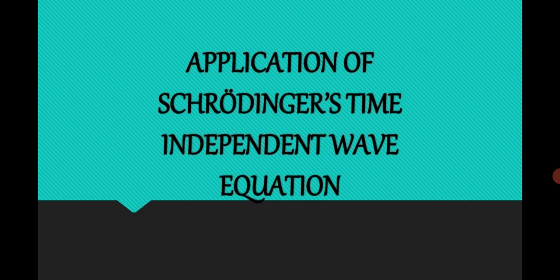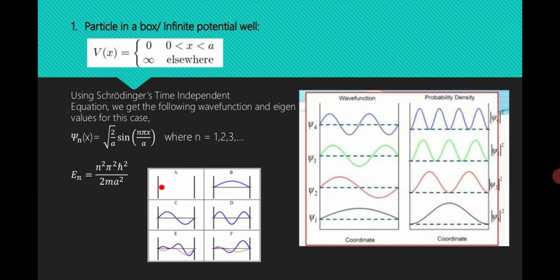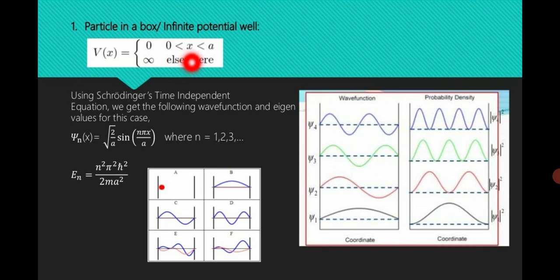Now, what are the applications? Why we study Schrödinger's time-independent equation? Consider a particle in a box or in an infinite potential well. The particle is confined in a well of infinite depth. The potential energy is 0 inside the well and infinite elsewhere. Using Schrödinger's time-independent equation, we get the wave function eigenvalues: ψ = √(2/a) · sin(nπx/a), where n = 1, 2, 3...